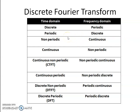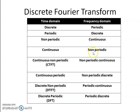Based on the duality property of the Fourier series: if the signal is periodic then the spectrum is discrete, and if the signal is discrete then the spectrum will be periodic. So, if the signal is periodic, the spectrum will be discrete. If the signal is discrete, the spectrum will be periodic. If the signal is not periodic, the spectrum will be continuous. And if the signal is continuous, the spectrum will be non-periodic — exactly the opposite.